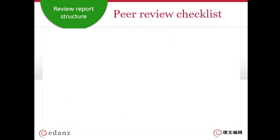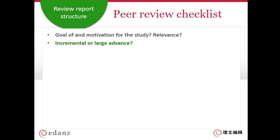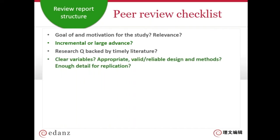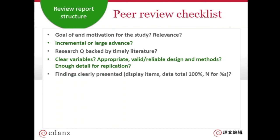Here's a quick peer review checklist for when you're looking through articles. Ask: What is the goal and motivation for the study? What's the relevance to the real world? Is the advance a large one or a small one? Is the research question backed by a good literature review? Are the variables clear? Is the design valid and reliable? Are the methods clear? Is there enough detail for other people to repeat the work?